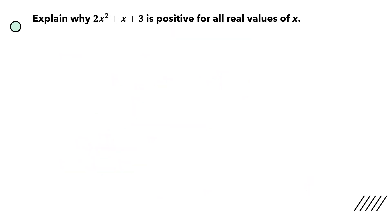Let's do another question. Again, this question starts with the word 'explain', so you have to do some explanation. Explain why 2x squared plus x plus 3 is positive for all real values of x. The method we're going to use is the same as what we have done for the first two questions — we are going to change 2x squared plus x plus 3 into a completed square format.